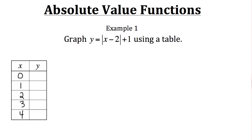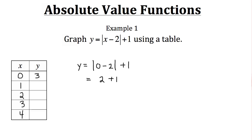Now let's evaluate those x values in our table. Starting with x equals 0: y equals the absolute value of 0 minus 2 plus 1. Well, 0 minus 2 is negative 2, and the absolute value of negative 2 is 2, and then plus 1. So y equals 3 when x is 0.